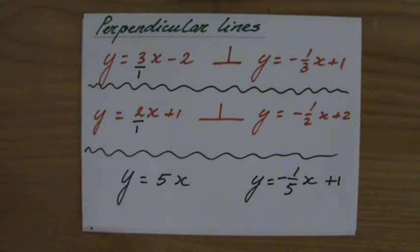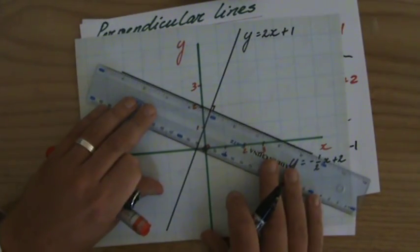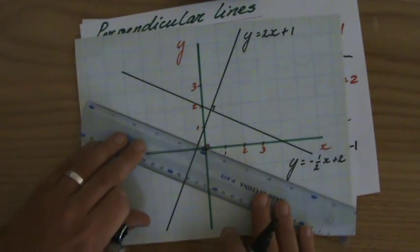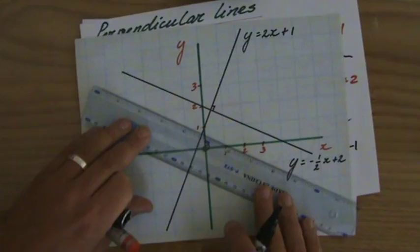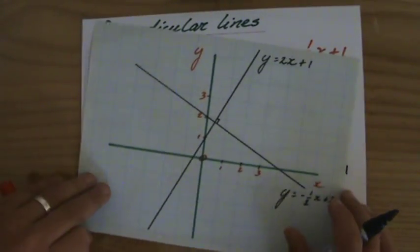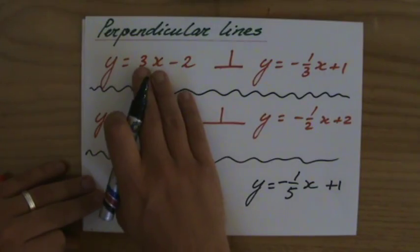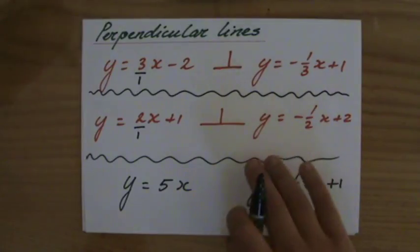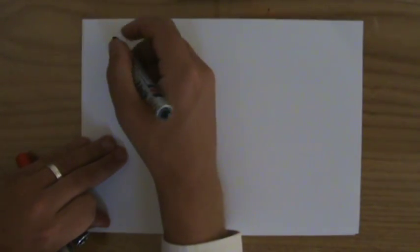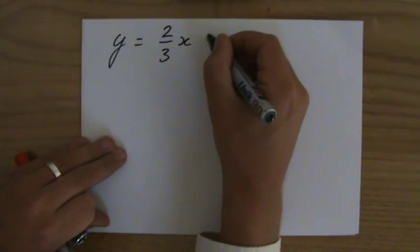Because all those lines, excuse me, are perpendicular. So the y-intercept changes all the time. Do you see the y-intercept change? The gradient remains the same. So perpendicular lines are lines as soon as their gradients are each other's negative reciprocal. I'm going to give you one more example. For instance, the line y equals 2 over 3x plus 5. Can you give me an equation of a line perpendicular to this line?